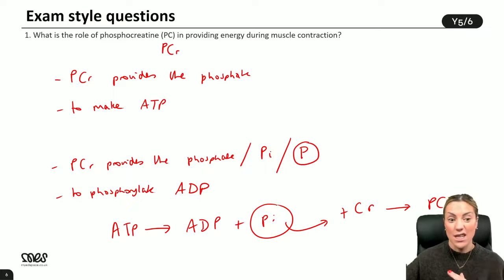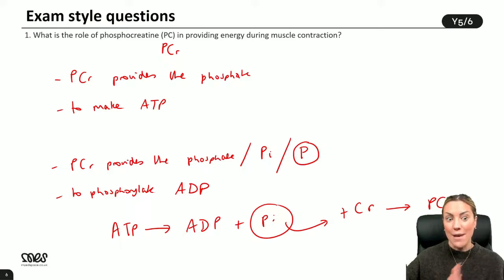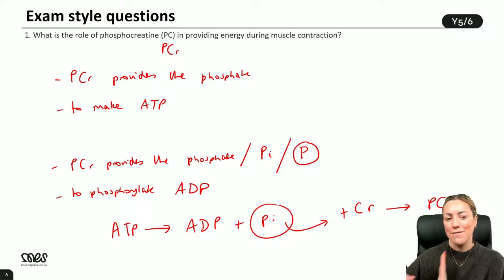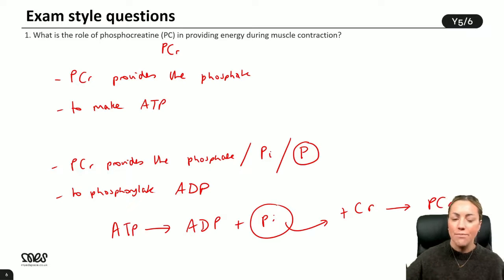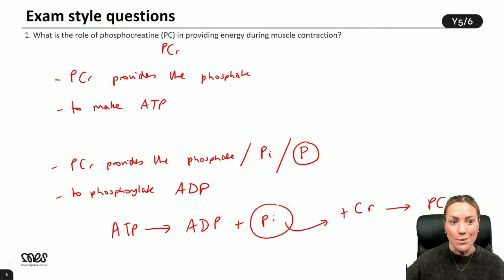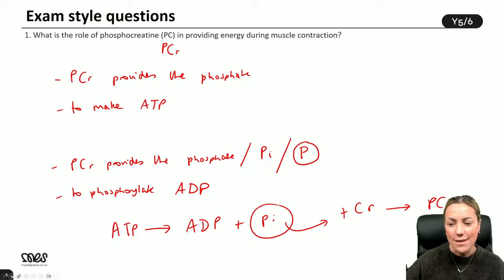So that's the third way. You've got aerobic, anaerobic, and skeletal muscles have this third way - the phosphocreatine system - so they can always have ATP for muscle contraction. They are not going to run out basically.